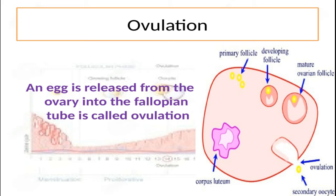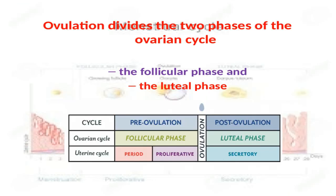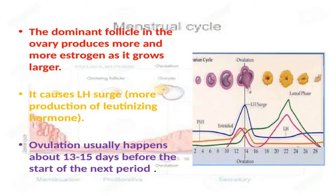That is the start of the second part of the ovarian cycle — ovulation — in which an egg is released from the ovary into the fallopian tube. Ovulation divides the follicular and luteal phases into pre- and post-ovulation phases. Ovulation occurs about halfway through the cycle, on average 14 days since the last menstrual flow began. There is a measurable decrease in the woman's basal body temperature followed by a rapid increase in temperature.